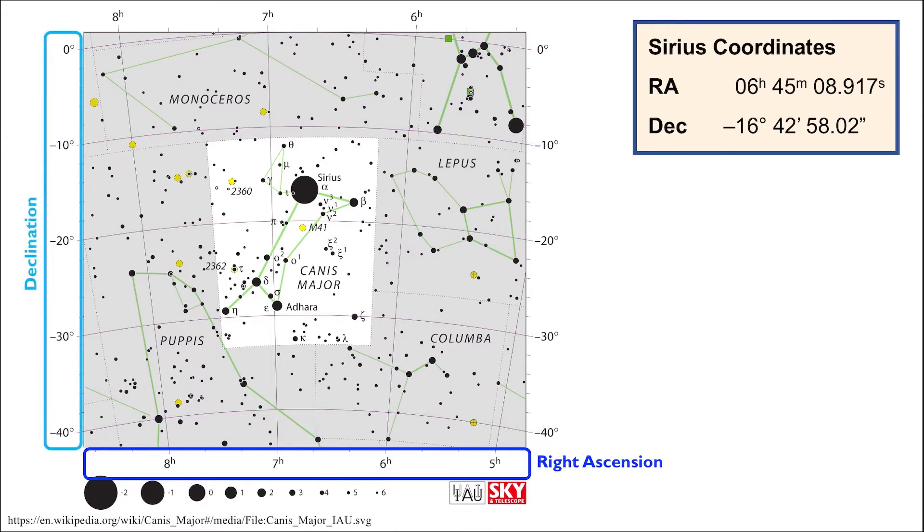To verify the declination of Sirius, we draw a curve similar to those already on the map that goes through Sirius. Following it to the left or the right side of the map allows us to read a declination value of a little bit more than negative 16 degrees.